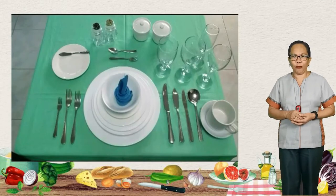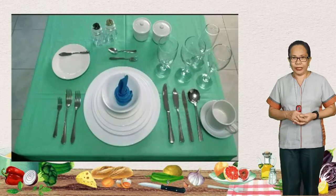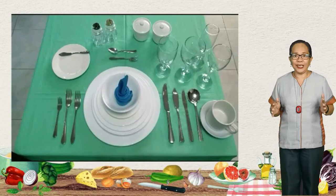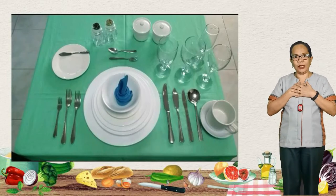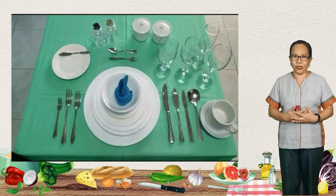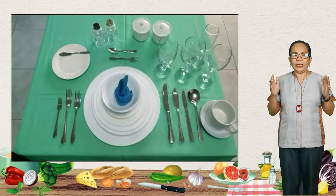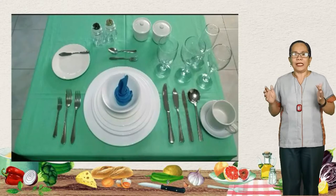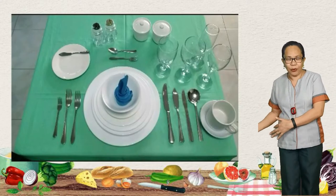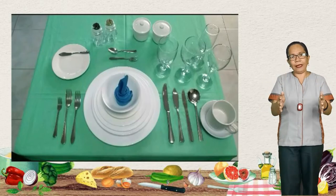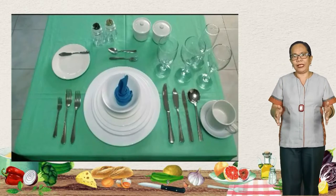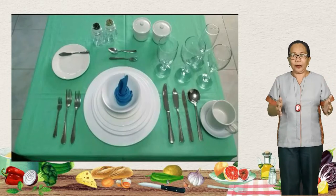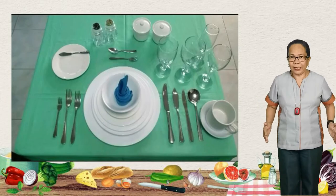This is a picture of one cover in which all of the table appointments are well arranged. This shows everything that will be used by one diner. When you dine in at a particular restaurant, you are considered a diner and a customer. The table shown in the picture together with the different table appointments is one cover. In food and beverage service, a cover refers to the space for one diner.